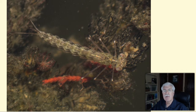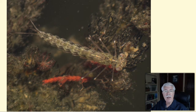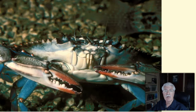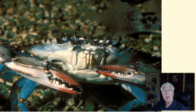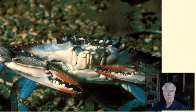Carnivores eat other animals. Omnivores eat both plants and animals. Parasites, such as leeches, get their energy directly from feeding off other living organisms, but they usually don't kill the organism in the process.